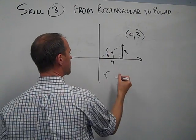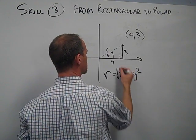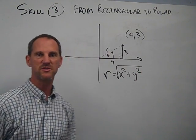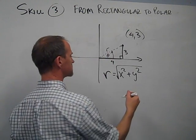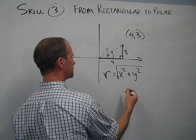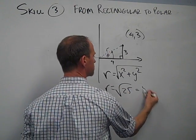So r is equal to square root of x squared plus y squared. That will give us that absolute distance it is from the origin. In this case, 4 squared is 16 plus 3 squared is 9, that's 25. Square root of 25 tells us r is equal to 5.